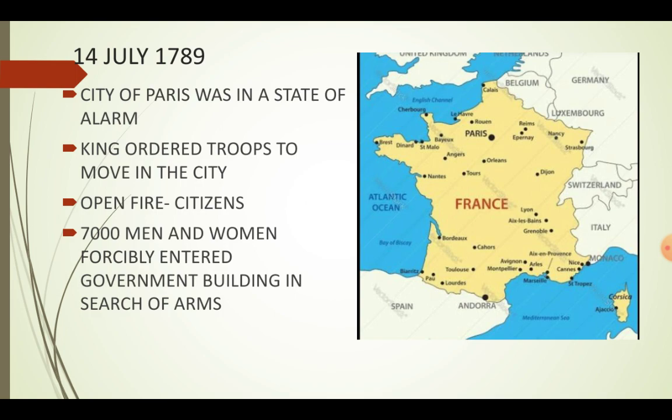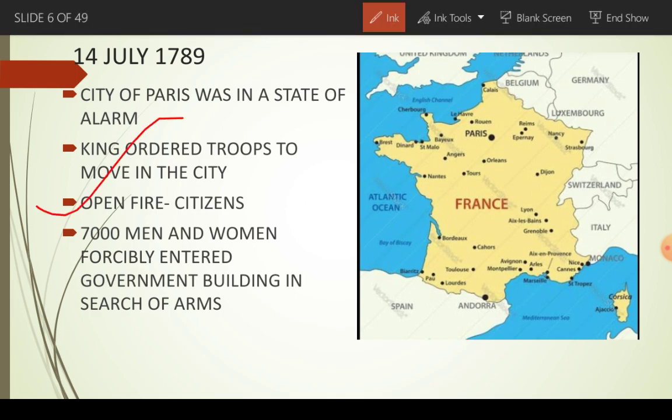On 14th July 1789, the city of Paris was in a state of alarm. State of alarm — aisa kya ho gaya tha? Actually, the people of France got to know that the king had planned something against them. They also got to know that the king ordered troops to move into the city and open fire on the citizens. For that, seven thousand men and women made an army and took an oath to fight against the king.